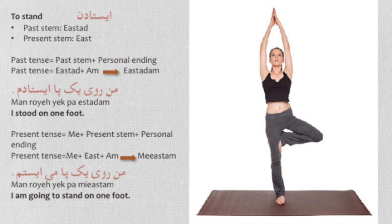The first verb is istadan — to stand. In Farsi, in order to make different tenses, you need to know the past and present stem. For the past stem, you drop the 'dan'; for the present stem, you need to memorize them.